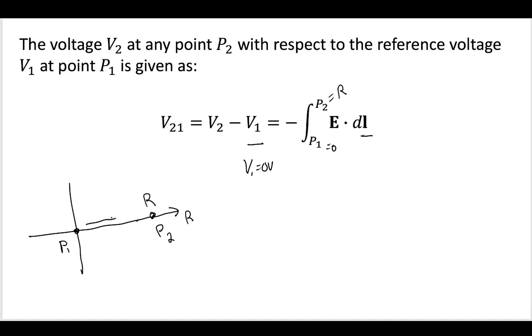So, looking at that, we can see that this is in the R-hat direction, and this could be in any direction. Looking at a table that contains various differential path lengths, we can see that this would be R-hat dr.